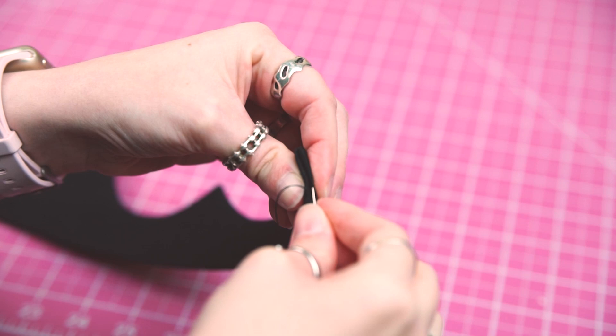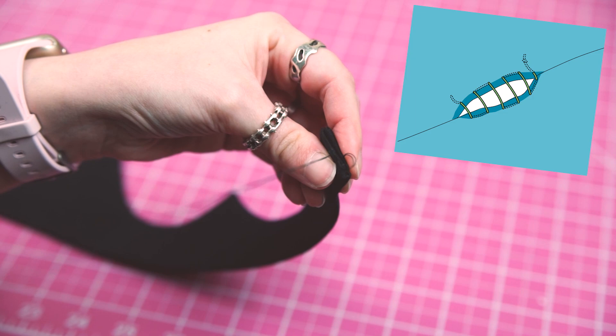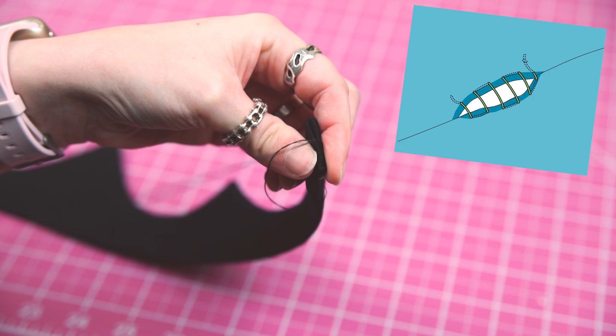I used a ladder stitch just like I described in my last video. There should be a little diagram on the screen that describes how this works. You just make a small stitch on one side of your seam and then make another small stitch on the other side of the seam until you close up the opening.